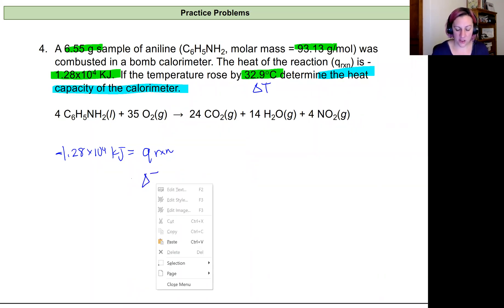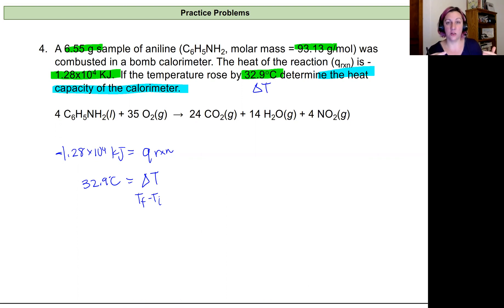Our change in temperature is that 32.9 degrees Celsius, and change in temperature is always T final minus T initial, so this should be a positive value, because the temperature of that surroundings is going to increase. So my final temperature should be higher than my initial temperature, giving me a positive change in temperature.